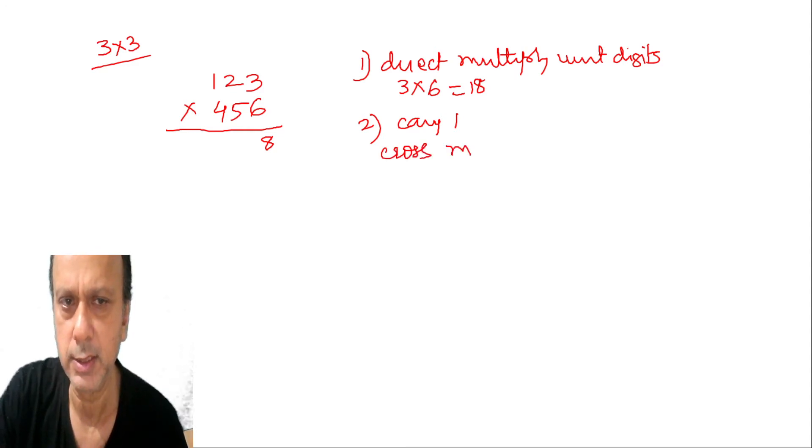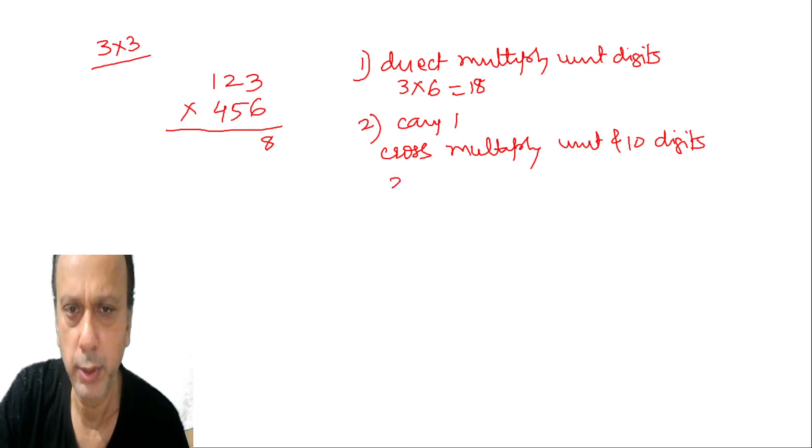You have to cross multiply unit and ten digits. So it will be 2 into 6 plus 3 into 5, and add the carry. That's 28. So in the answer slot write 2 and carry forward 2 for the next step.